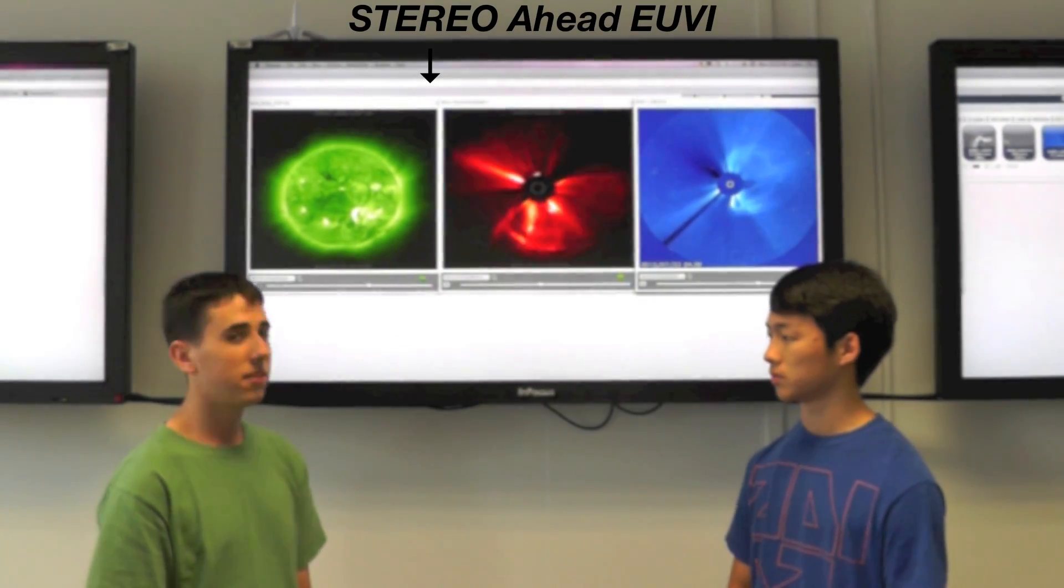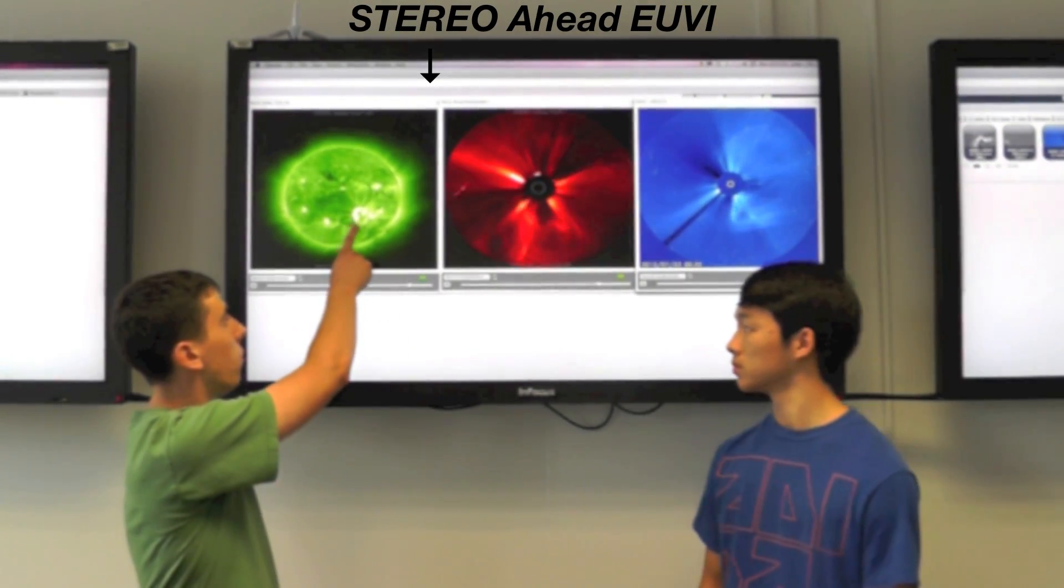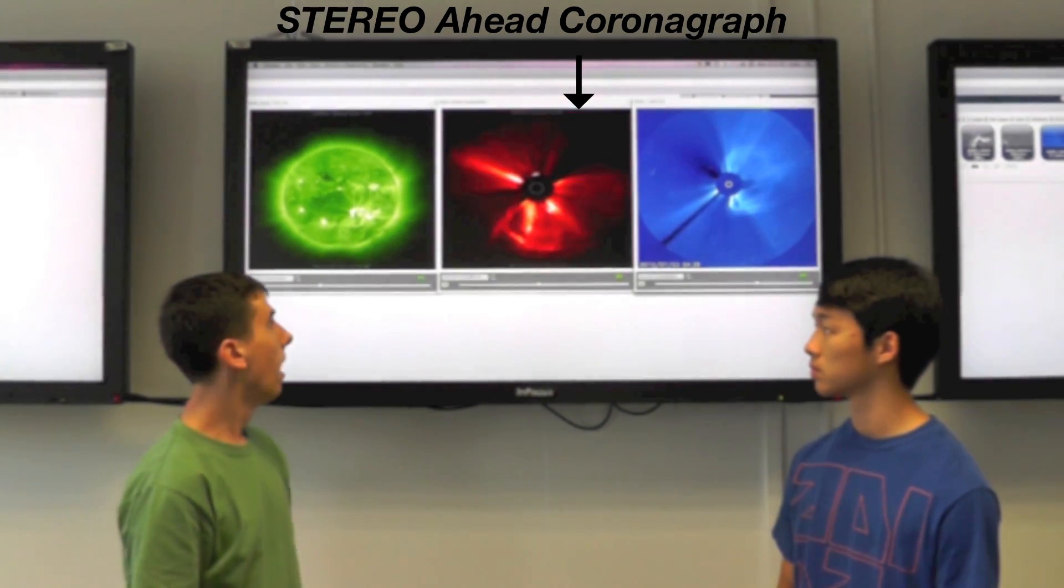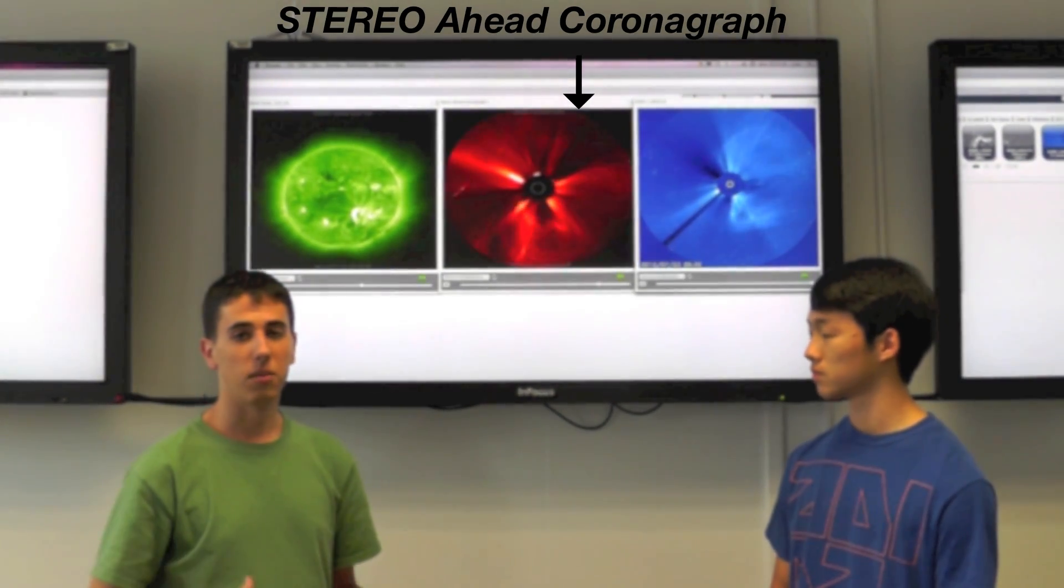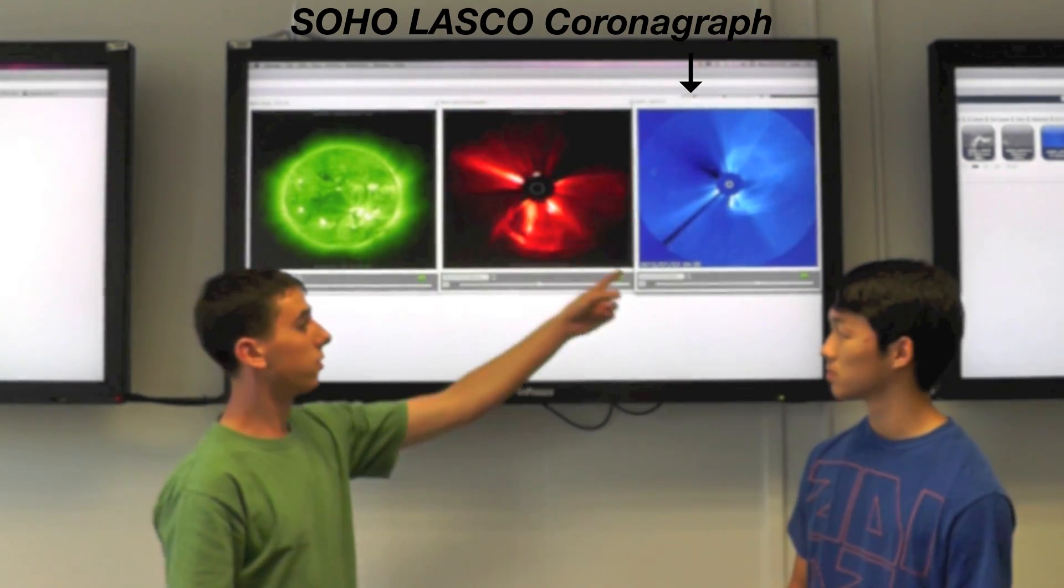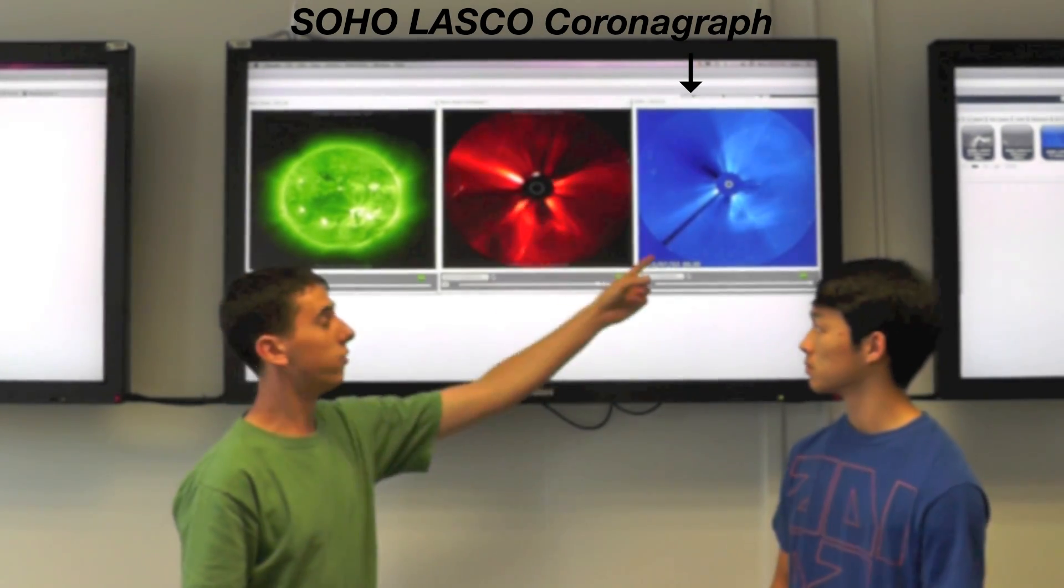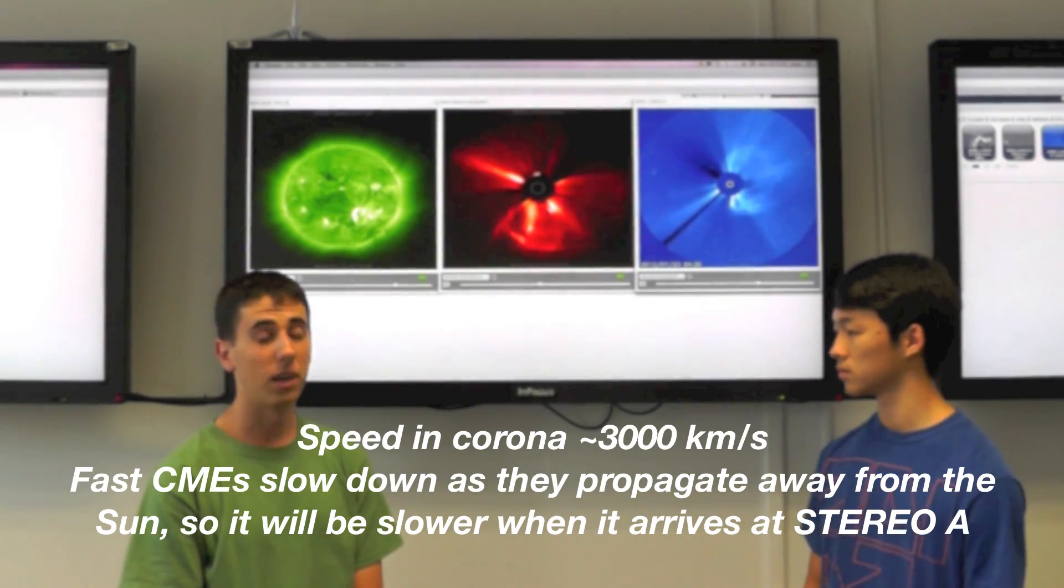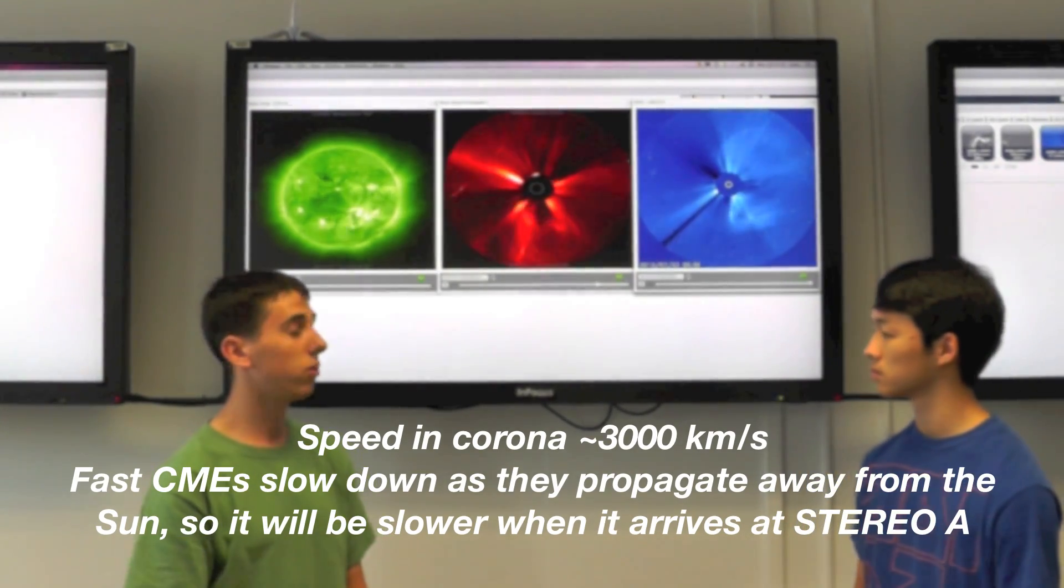This morning we had some neat events that occurred. Active Region 1520 is located in this bright area in the Stereo-A imagery. And this morning it released a large flare and an associated CME. Using these other chronograph imagery, Stereo-A and SOHO, we found the speed to be approximately 3,000 km per second, which is quite fast. And it is directed towards Stereo-A.